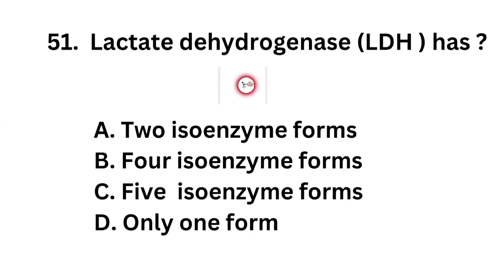Question number 51. Lactate dehydrogenase, or LDH, has: Option A: 2 isoenzyme forms. Option B: 4 isoenzyme forms. Option C: 5 isoenzyme forms. Option D: Only one form.